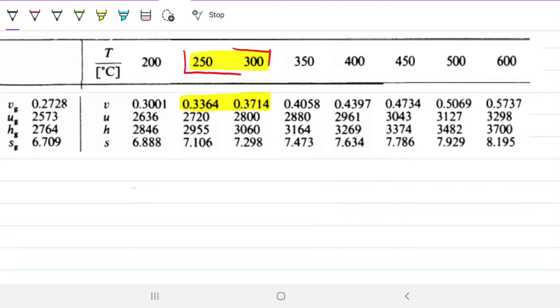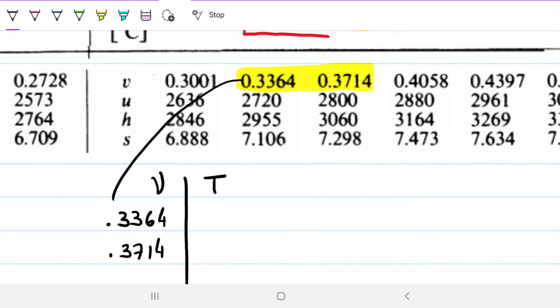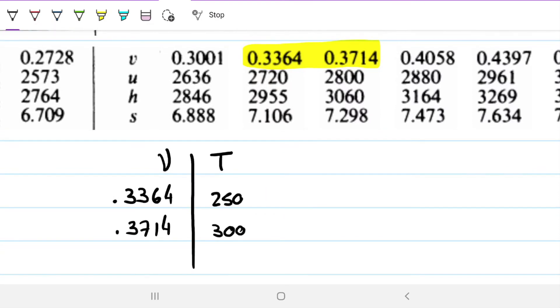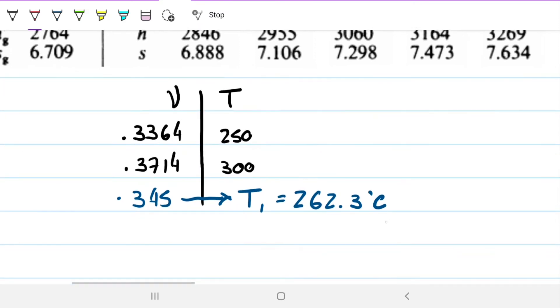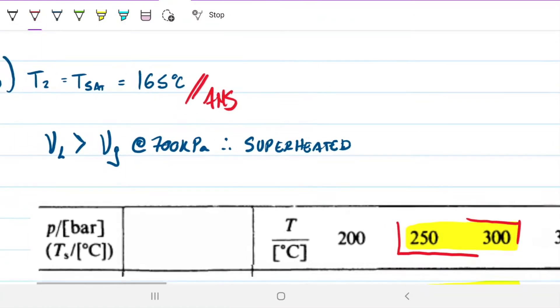To find that, I can do an interpolation. I'm going to do a linear interpolation. There's a video on how to do it, on the theory behind it, and also a video showing how to do this on a calculator, on Excel, or by hand. I'm just plugging the values from the table. The temperature of this is 250 and this is 300, and our value is 0.345. I can interpolate to find the temperature, and I get T1 is 262.3 Celsius.